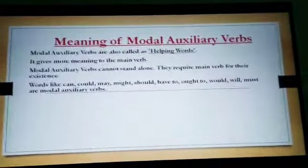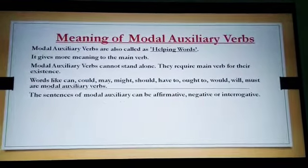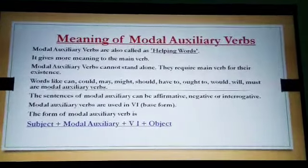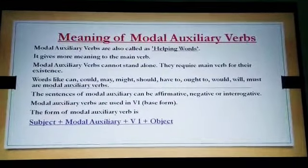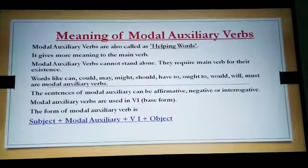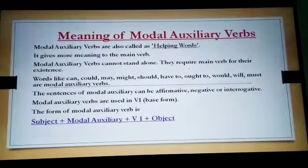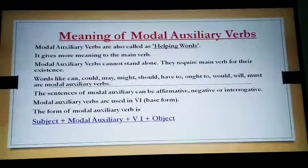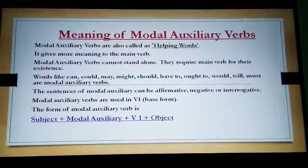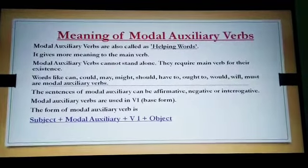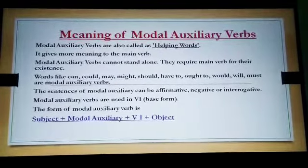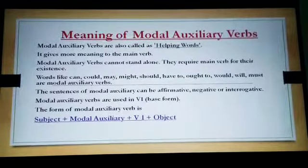Let us see the form of modal auxiliary verbs: Subject + Modal Auxiliary + V1 + Object, where V1 means the base form of the verb. Modal auxiliary verb sentences can be affirmative (positive), negative (using 'not'), or interrogative (question sentences). Modal auxiliary verbs are used with V1, the base form of the verb.